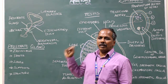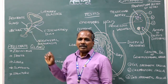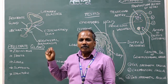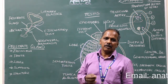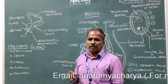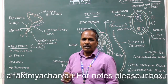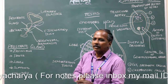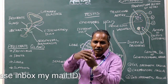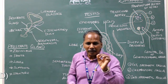Prostate gland. It is a pyramidal-shaped fibromuscular glandular organ present surrounding the prostatic urethra, that is the part of the urethra which is surrounded by the prostate gland.